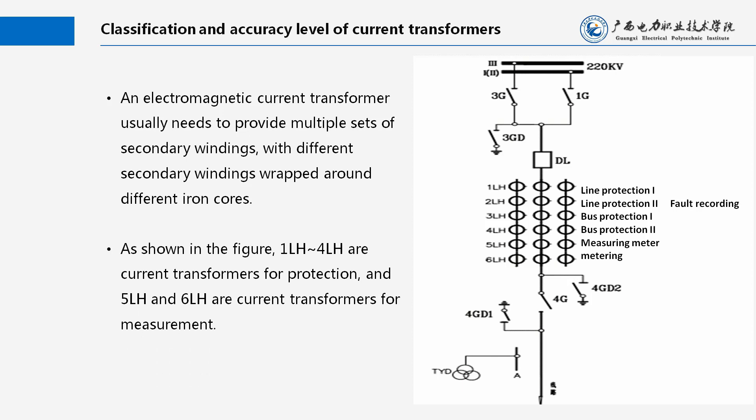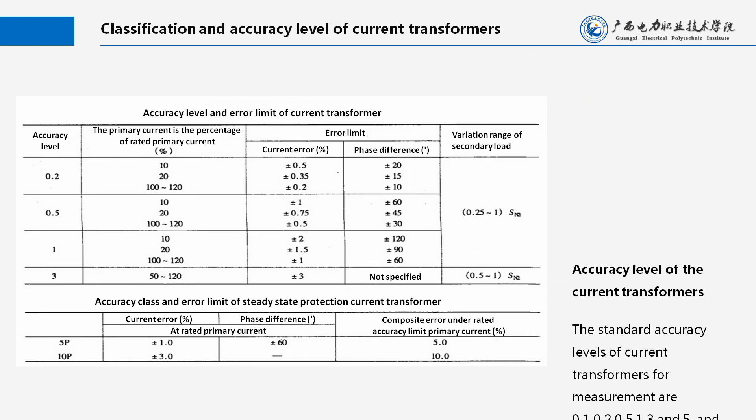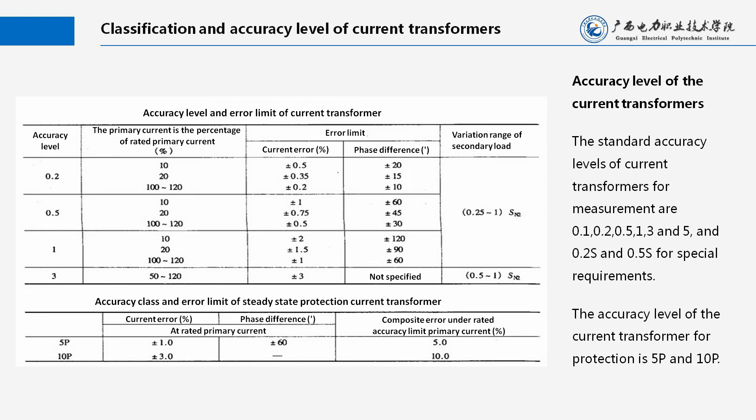As shown in the figure, 1LH to 4LH are current transformers for protection, and 5LH and 6LH are current transformers for measurement. The standard accuracy levels of current transformers for measurement are 0.1, 0.2, 0.5, 1, 3 and 5, and 0.2S and 0.5S for special requirements. The accuracy level of the current transformer for protection is 5P and 10P.